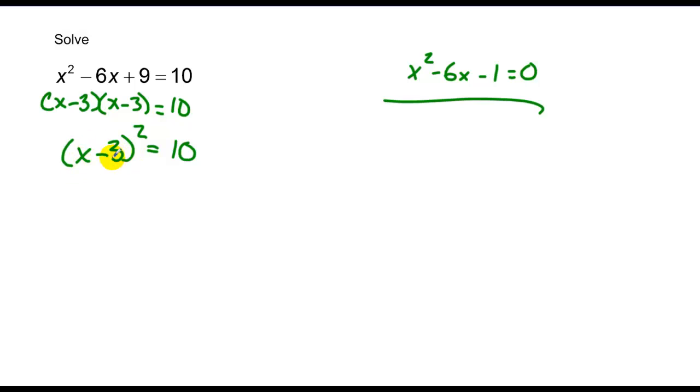I have a term isolated and it's squared equaling another term. I can go ahead right now, square root both sides, making sure I go plus minus here, and get x minus 3 equals plus and minus the square root of 10, even though that doesn't simplify. So now I have x equals 3 plus or minus the square root of 10, and I'm all done.